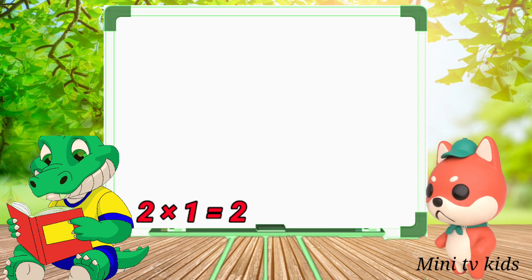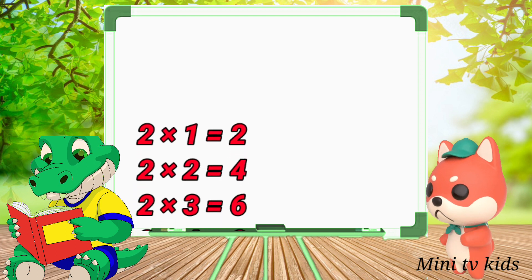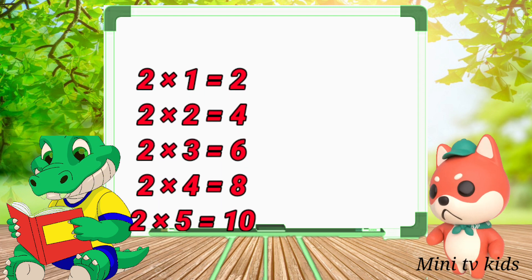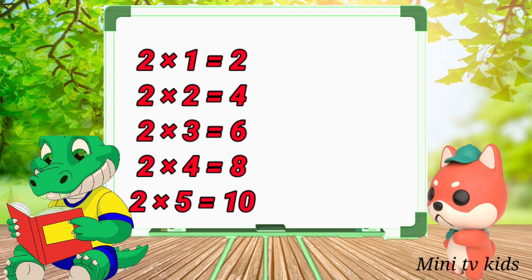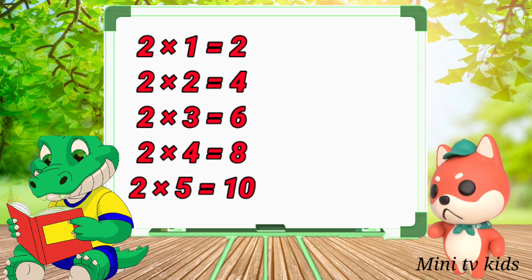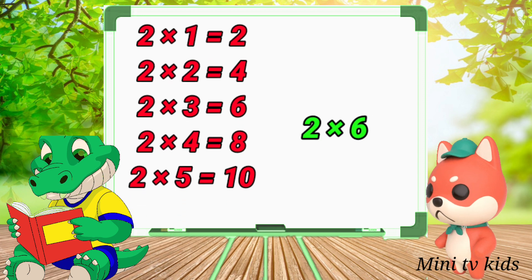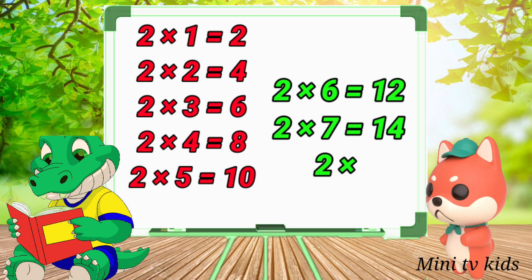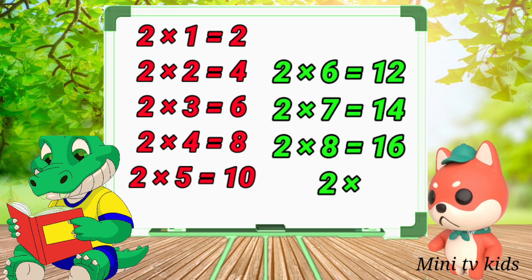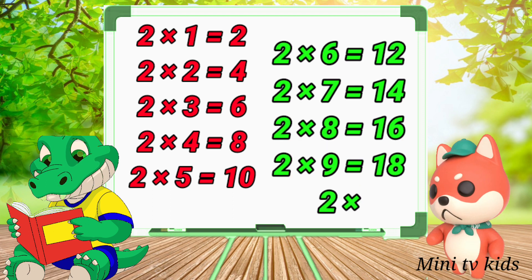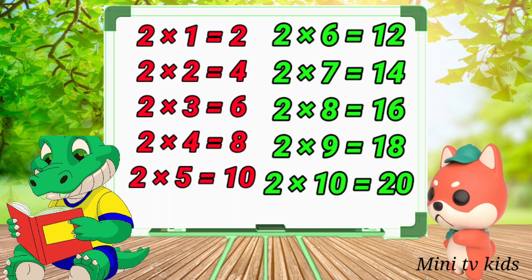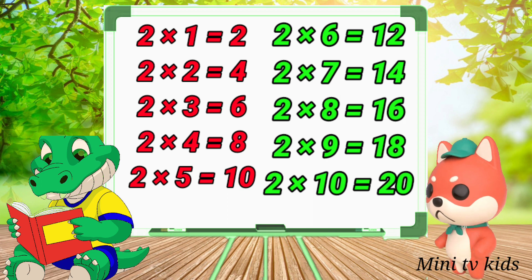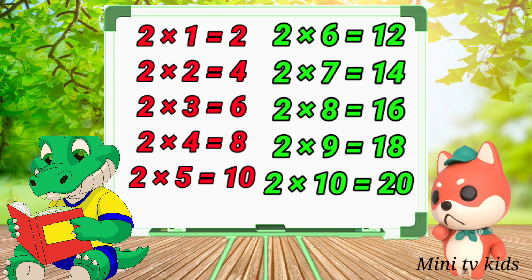2 1's are 2, 2 2's are 4, 2 3's are 6, 2 4's are 8, 2 5's are 10, 2 6's are 12, 2 7's are 14, 2 8's are 16, 2 9's are 18, 2 10's are 20.